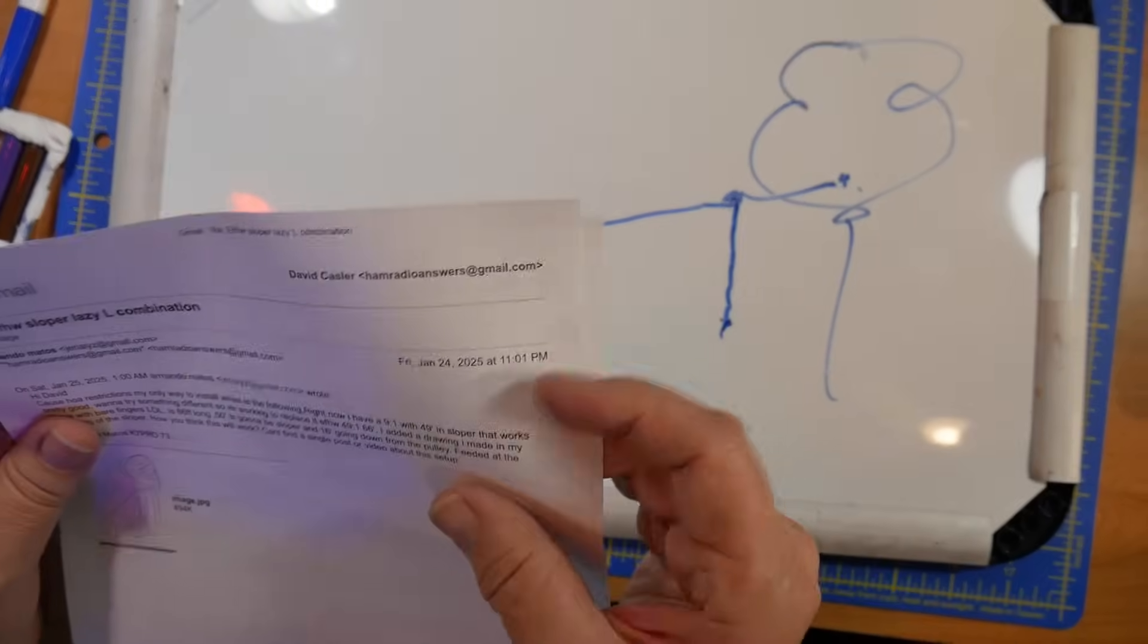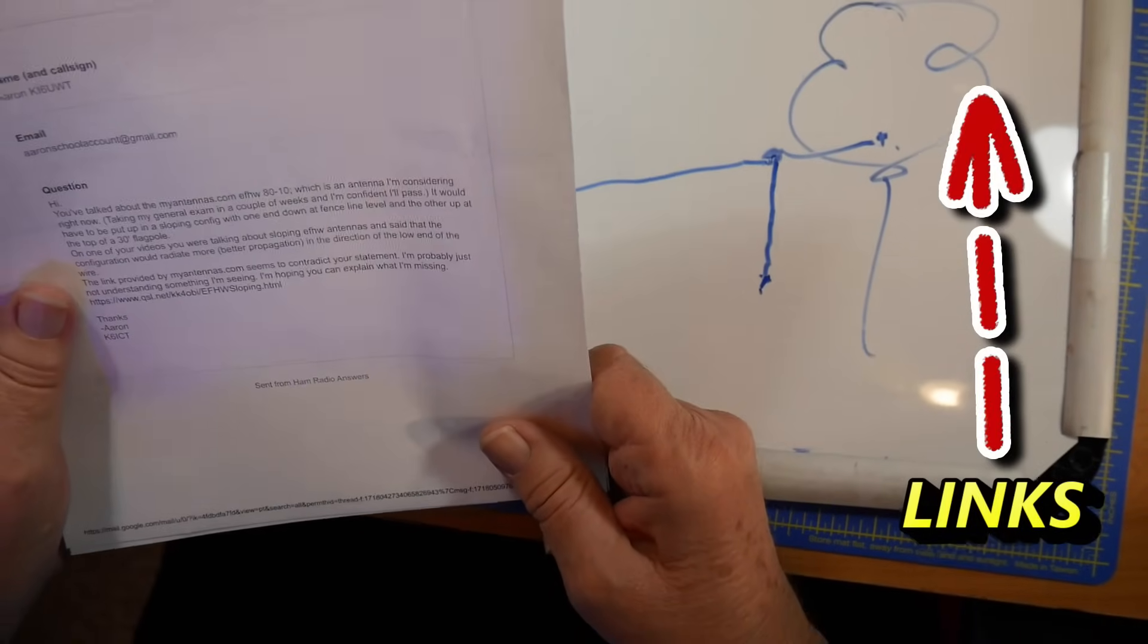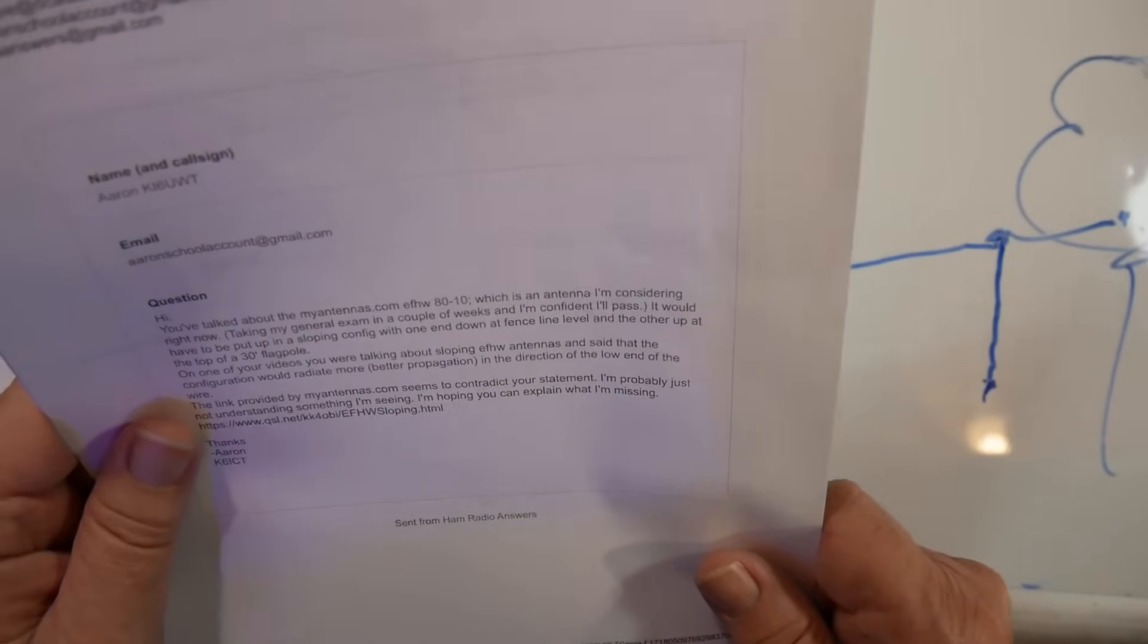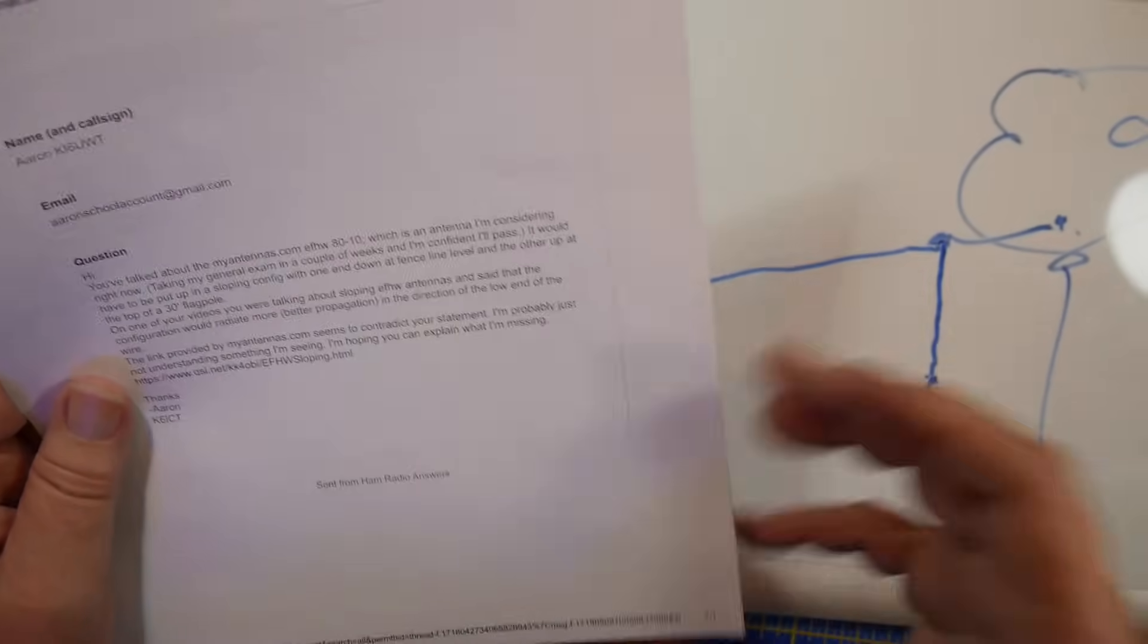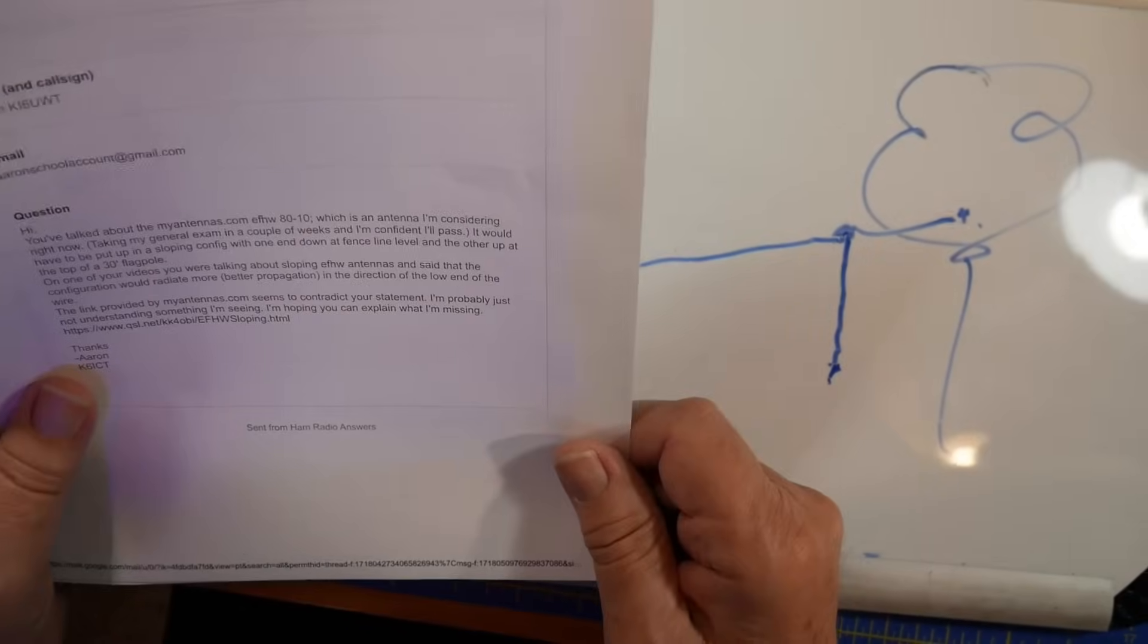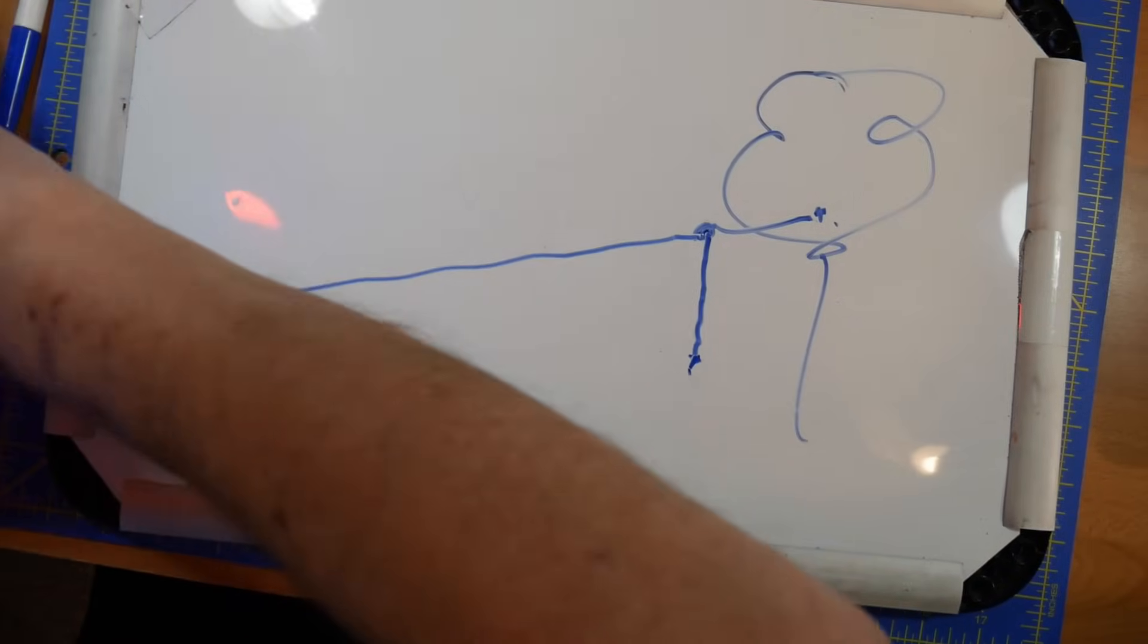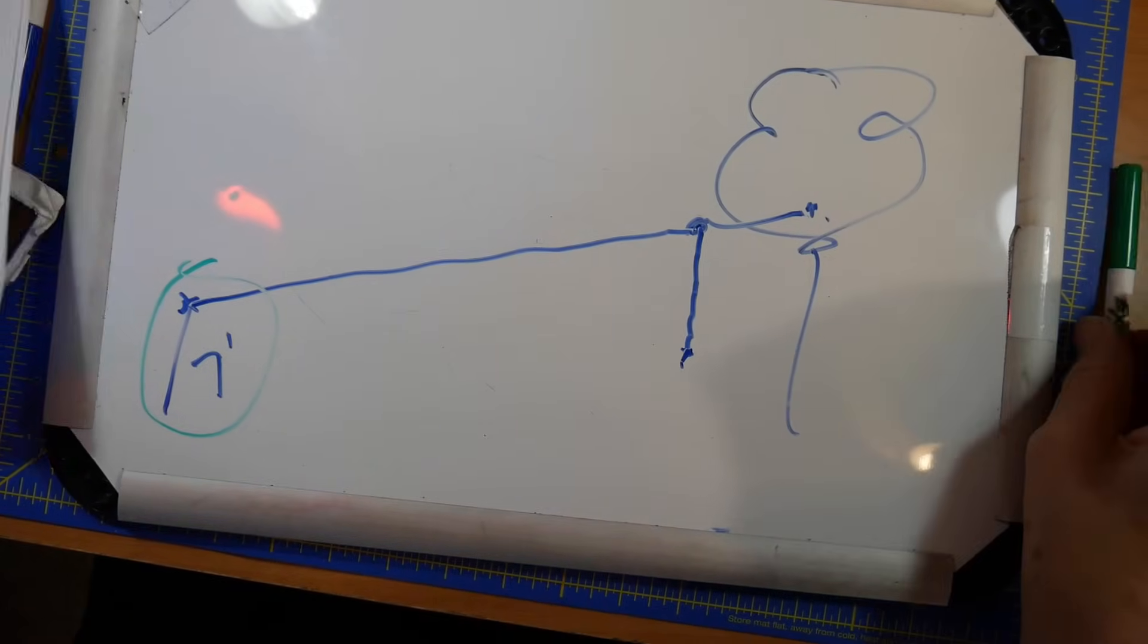Now the other question, the question from Aaron, says he's got the myantennas.com end fed half wave 80 through 10. He's considering that. He was taking his general exam in a couple of weeks and is pretty confident he'll pass. We assume that he's done that by now. Maybe he's an extra. He would have to put it in a sloping configuration with one end down at the fence line level, which is very similar to what we've got right here. Think of that as a fence or a wall or something like that.